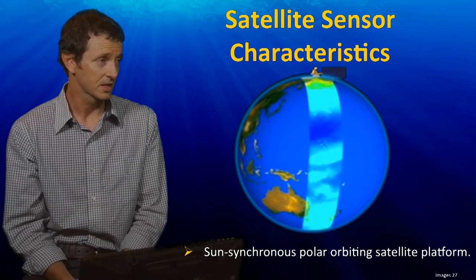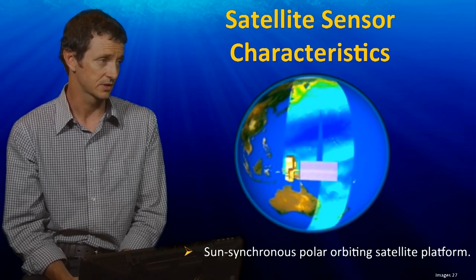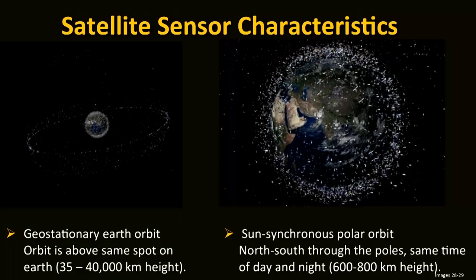This is a polar orbiting sun-synchronous satellite collecting information from the Earth's surface. There are two types of satellite orbits used to collect information about the surface of the Earth's coast and oceans. The sun-synchronous polar orbiter is in a low Earth orbit, between 400 and 800 kilometres above the surface. It takes about 100 minutes for the satellite to orbit the Earth, and satellites can come back to collect images from every day to every two weeks.